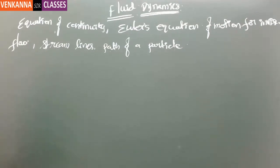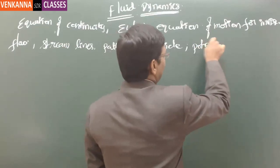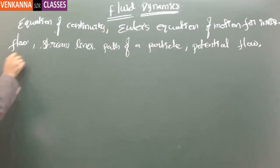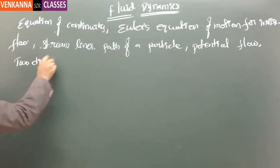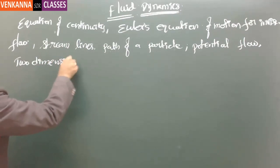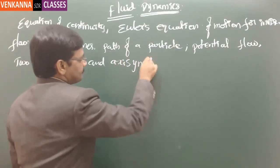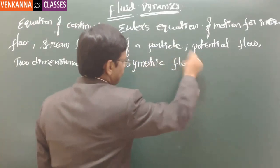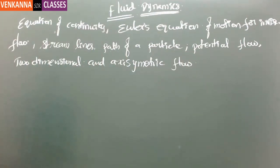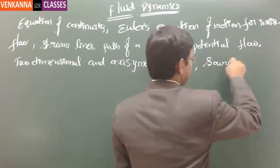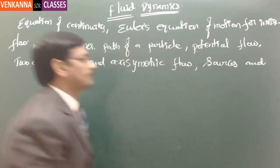Then we have potential flow — two-dimensional and axisymmetric motion — covering two-dimensional flow and axisymmetric flow.